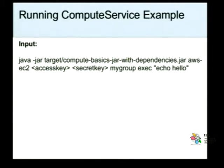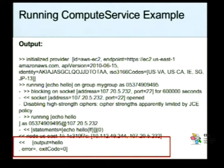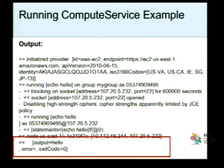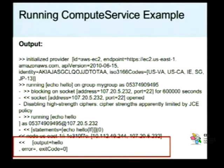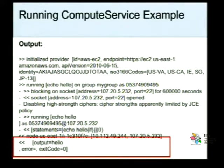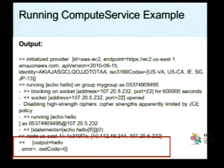Vamos ver como é que isso funciona. Uma vez executado esse comando, ele está dizendo lá: executando o echo hello no grupo mygroup. E aí tem questões de endereço IP do servidor. Por fim, onde está destacado em vermelho, está escrito output igual a hello. Código de saída zero. A instrução foi executada com sucesso, devido ao código zero. E o resultado foi hello, que era o resultado esperado. Esse comando foi executado lá no nó que a gente criou anteriormente com o mygroup.add.